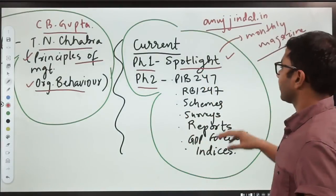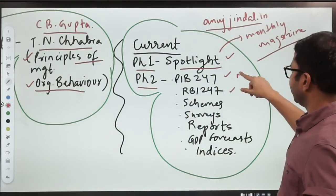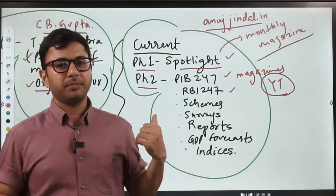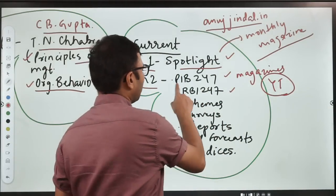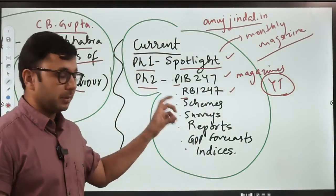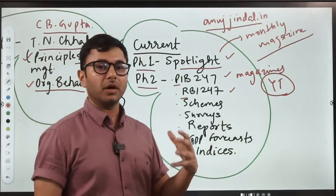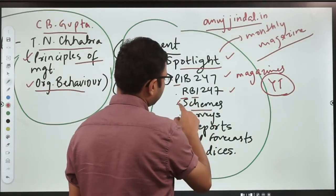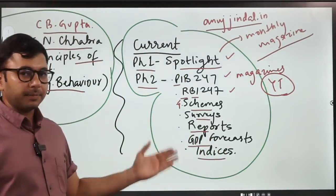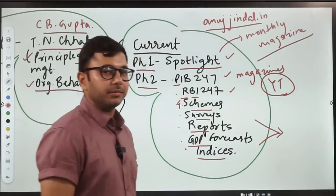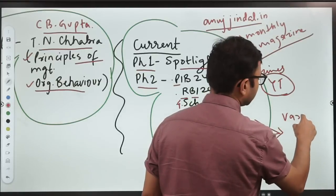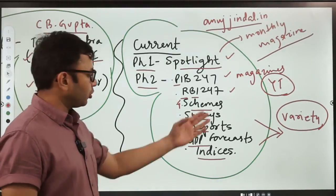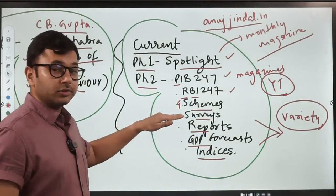Phase two current: RBI PIB 247, RBI 247, these are again magazines. Their videos are available on YouTube for free. You can use these videos or their PDFs to cover your current affairs. PIB 247 covers PIB which is a website by the government of India, the most reliable website to cover everything happening in Indian economy. RBI 247 covers finance current affairs. Then we have government schemes, surveys, reports, GDP forecasts, indices. You can collect them from a variety of sources. Important: government schemes, all the schemes, all the ministries.